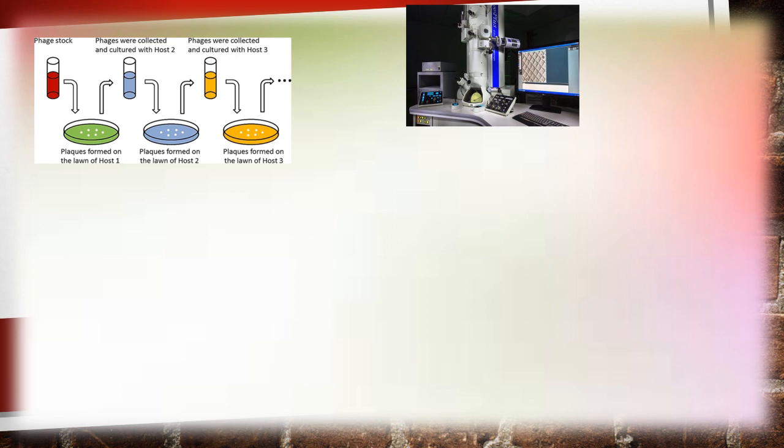Methods presently used for phage detection and enumeration are categorized according to the measured object. For detecting whole bacteriophage particles, transmission electron microscopy is used, and it remains the gold standard in the identification of bacteriophages.